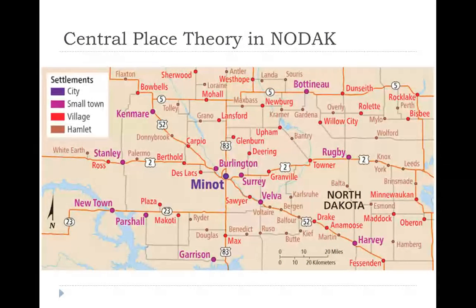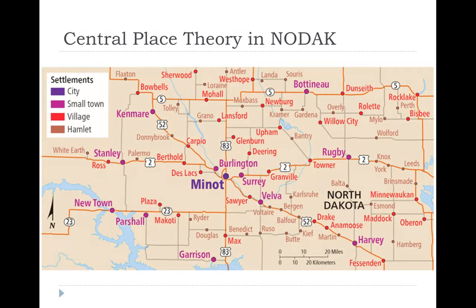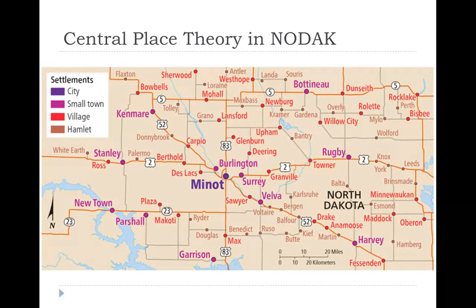This nesting pattern works in the real world. Take Minot, North Dakota as the major city: around it you have villages, hamlets, and small towns. The whole surrounding area forms Minot's market area. People in Rugby who can't find a good or service locally may travel to Minot. People in Granville might go to Surrey first, and if they can't find it there, continue on to Minot. Larger cities attract more goods and services because more people are willing to drive there.